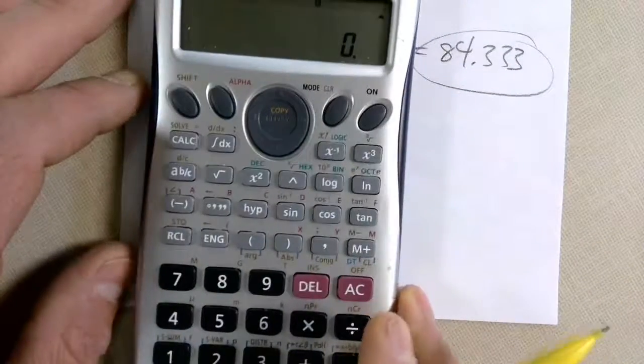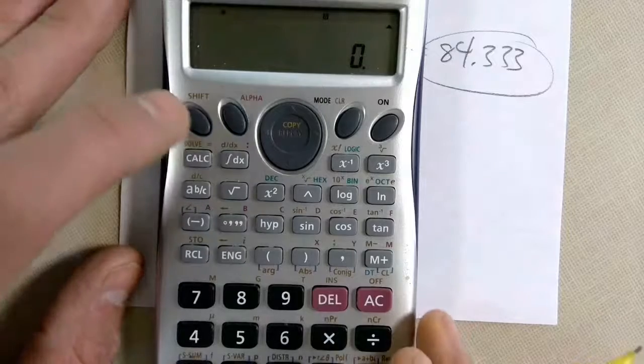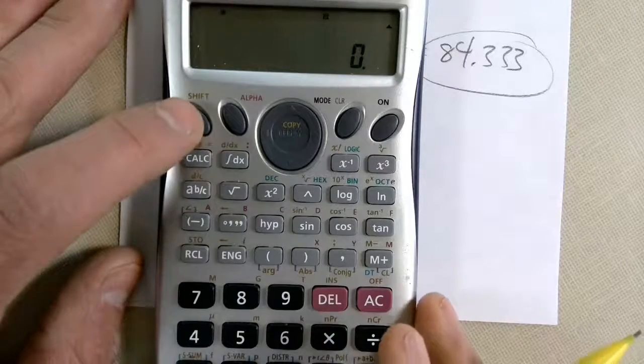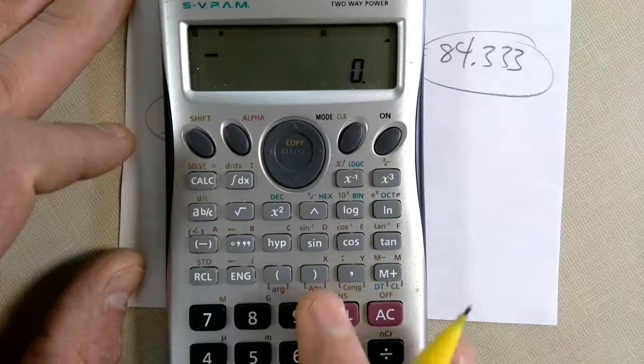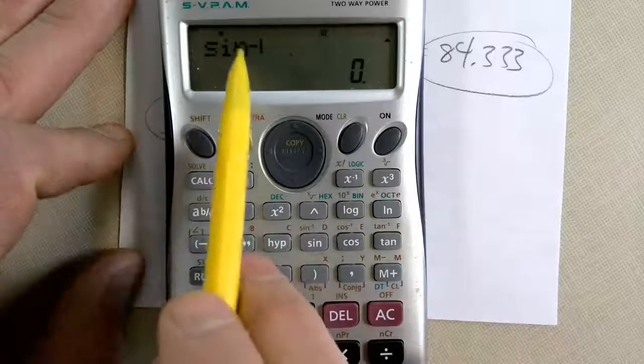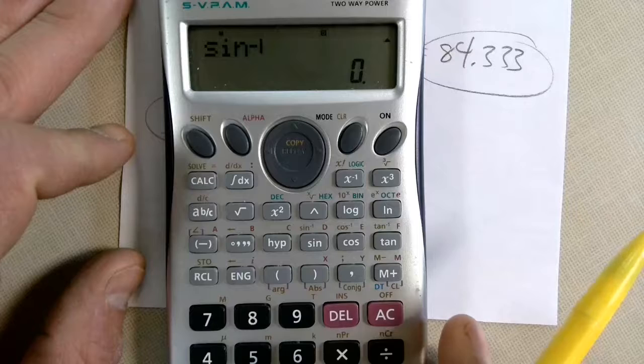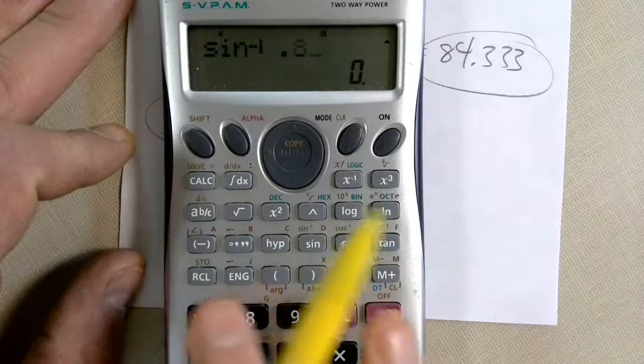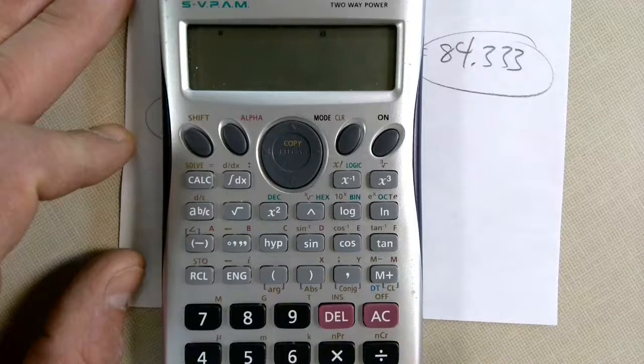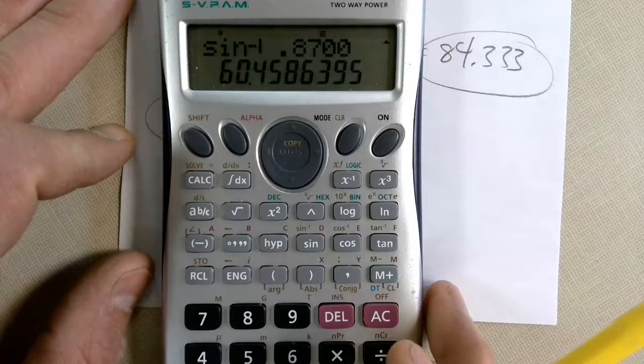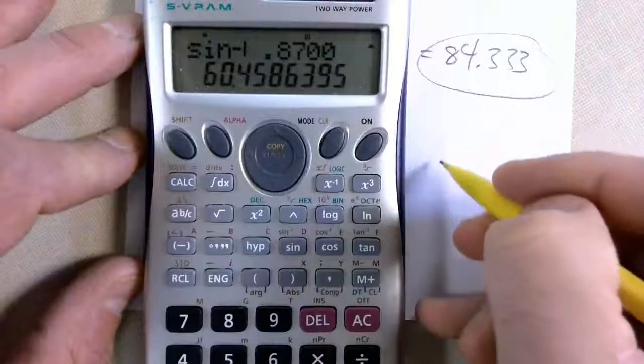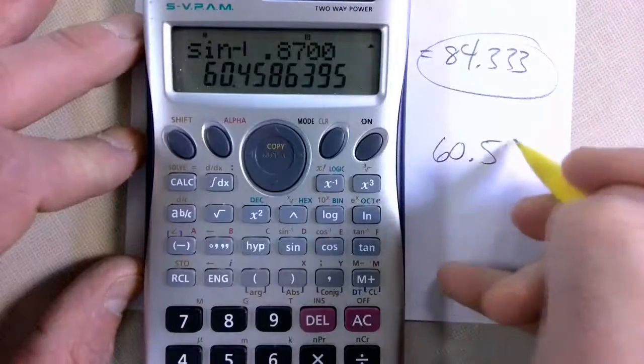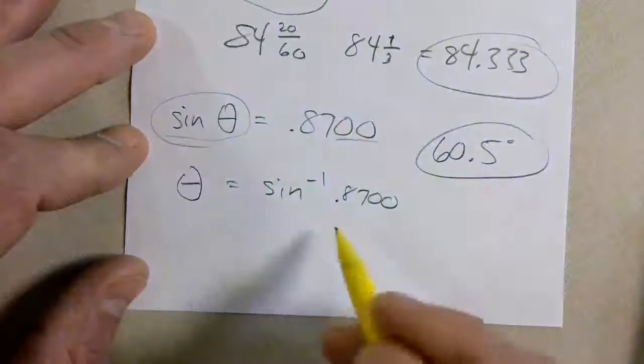Now, in order to get at that, most calculators, you'll have to use a shift button or a second button. So, I'm going to do shift inverse sine. See how it pops up like that and then I'm going to type in the number, which was 0.8700 and the answer is 60.458. Now, those are degrees and we're going to round it to the nearest tenth. So, 60.5 degrees is the angle.